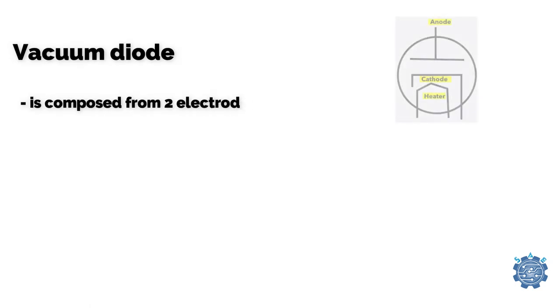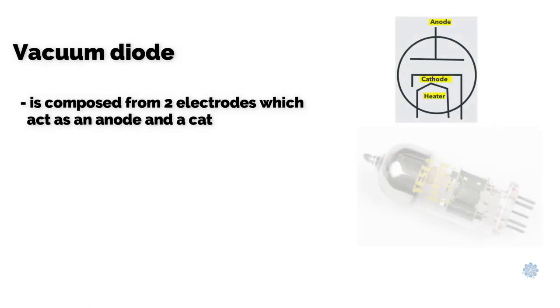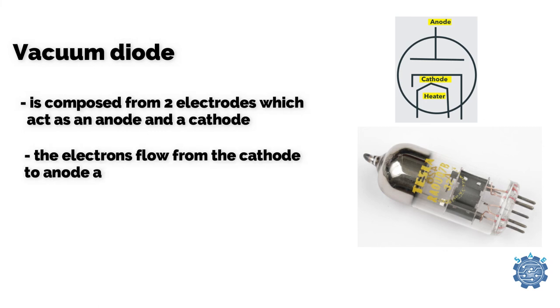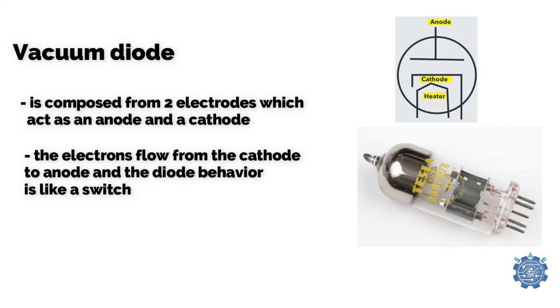Vacuum diode is composed of two electrodes which act as an anode and a cathode. The electrons flow from the cathode to the anode and the diode behavior is like a switch.